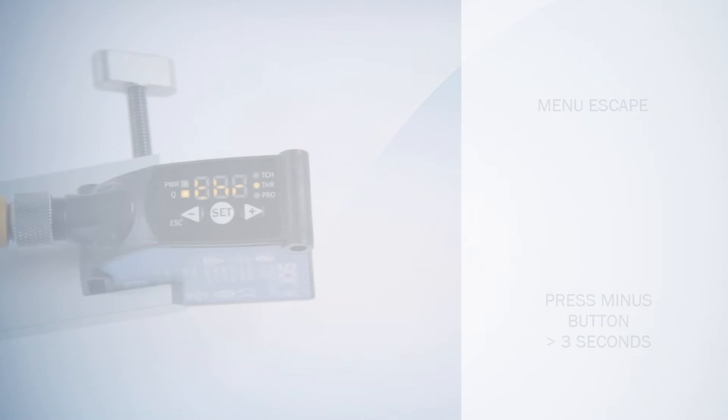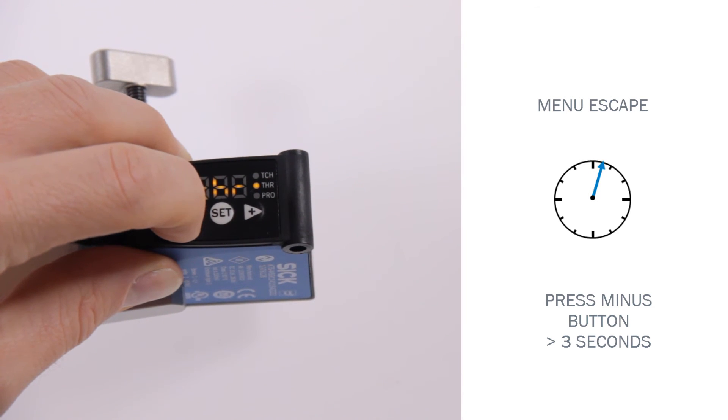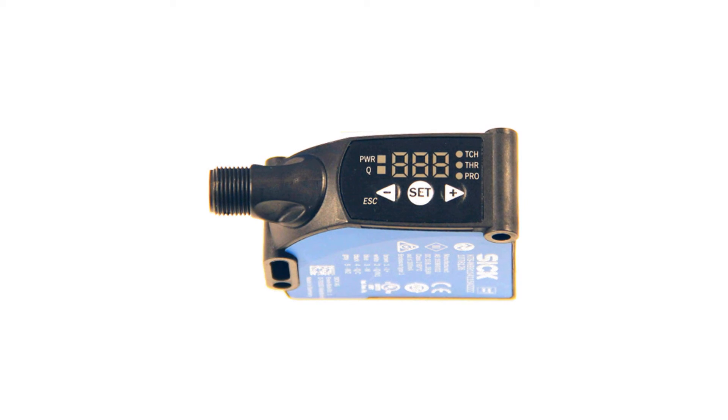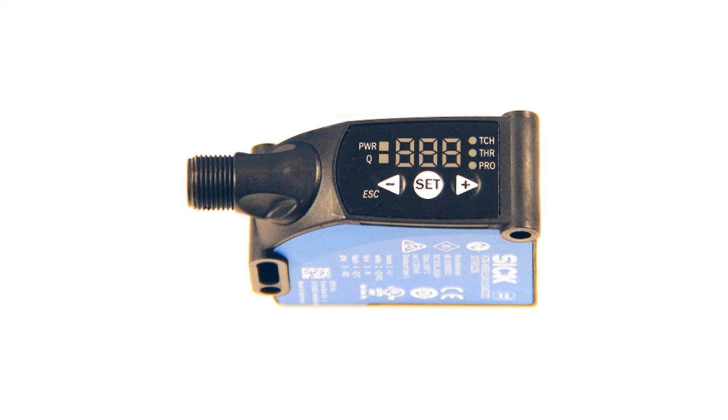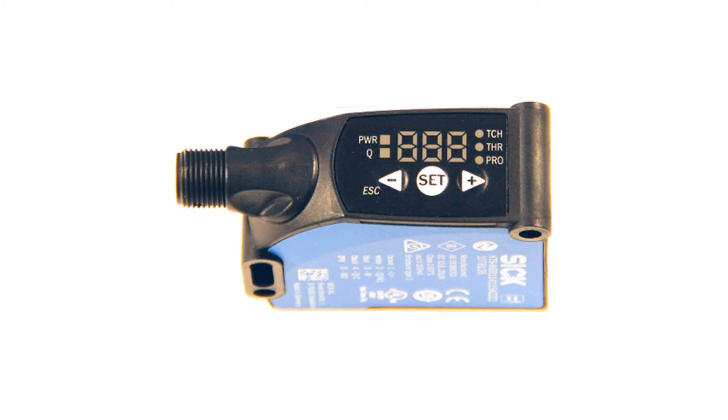Escape. For leaving the current menu item, hold down the minus button for longer than 3 seconds. This is valid for all menus. We hope that this tutorial helped to understand the basic settings and teach-in methods of the KTS-KTX contrast sensor from SICK and hope to see you during one of the next tutorials.